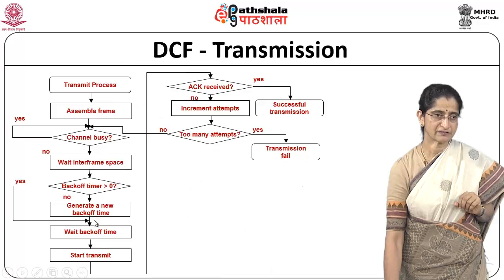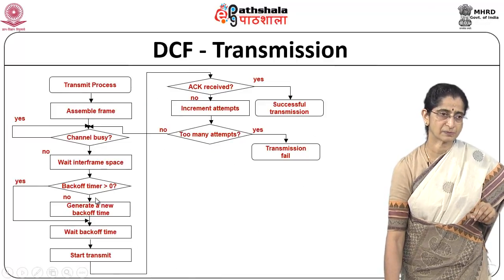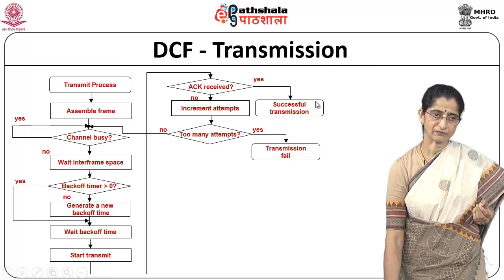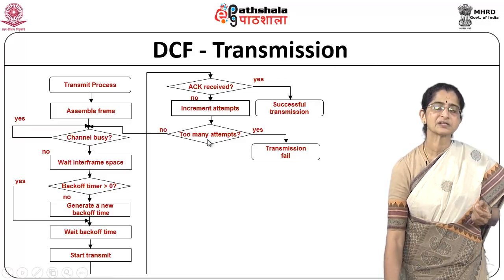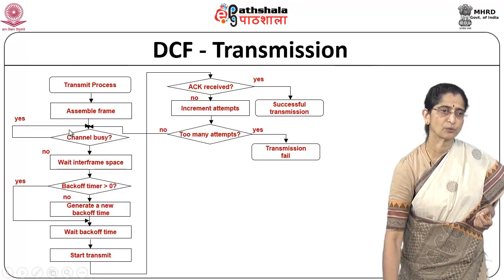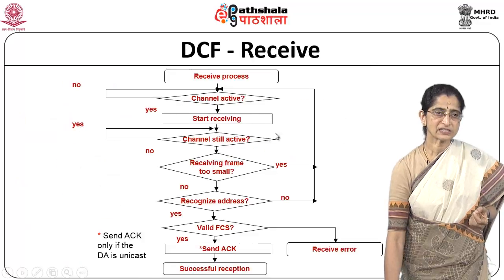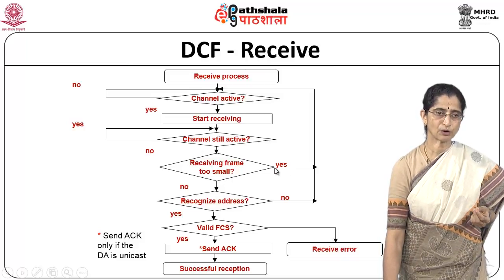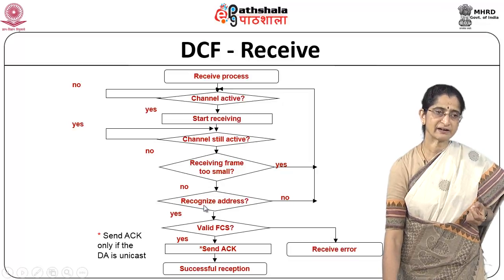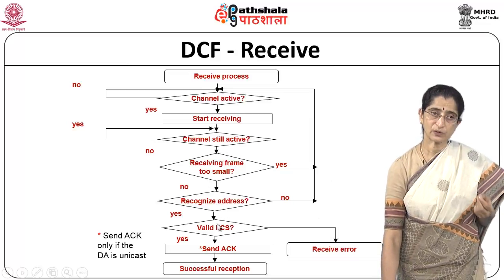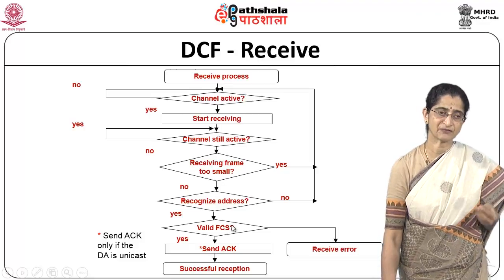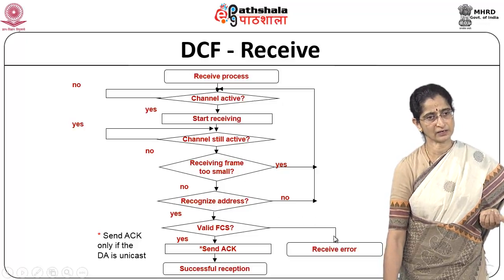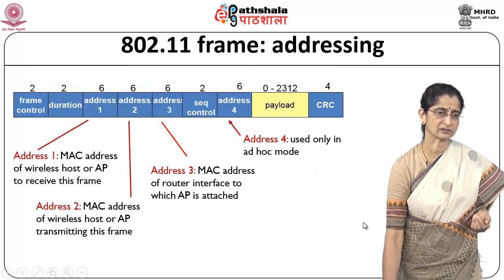The DCF transmission flow: check if the channel is busy; if not, wait for the interframe space; generate and wait for a back-off time; then transmit. If ACK is received, transmission is successful. Otherwise, increment the number of attempts; if too many attempts, declare failure; otherwise retransmit. On the receiver side: check if the channel is active; start receiving; if the receiving frame is too small, something is wrong; check the address; validate FCS — if valid, send acknowledgement and reception is successful; otherwise indicate an error.